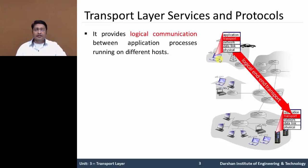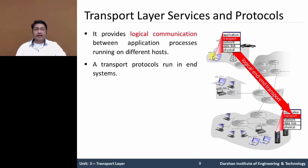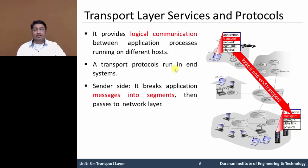In this figure, in this network, the end systems connect with logical end-to-end communication. The transport layer provides logical end-to-end transportation. The transport layer protocol is implemented in end-to-end systems, but not in the network router. On the sending side, the transport layer converts the application layer messages received from the sending application process into transport layer packets, known as transport layer segments.